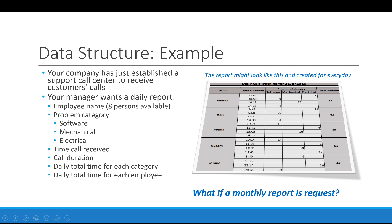The way you read this report is: you go from the employee name and time received — so Ahmed received the call at 10:55, it was a software problem, and the call took nine minutes. You cross the problem category with the employee name who received the call. The table as it stands is a cross table, and you cannot easily merge cross tables together when they have a structure that shrinks and grows — it's not the same structure every time.